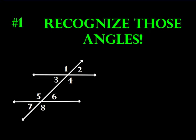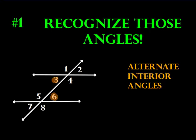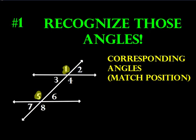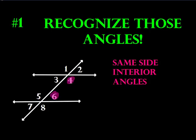We'll take a quick look at some vocab examples. We have alternate interior angles — those are inside the parallel lines and on alternating sides of the transversal. We have alternate exteriors — outside the two parallel lines and on alternating sides of the transversal. We have corresponding angles, which match positions — for example, angle 1 and angle 5. And same side interiors are two angles that are interior and on the same side of the transversal, such as angles 4 and 6.